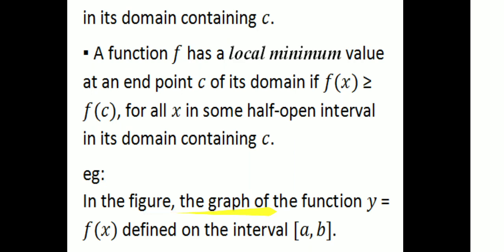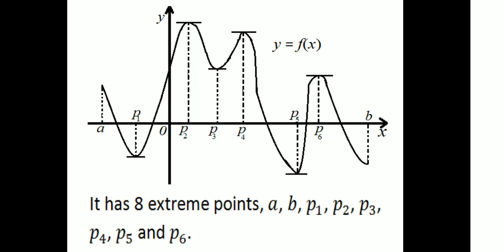Consider the graph of the function y = f(x) defined on the interval [A, B]. The function is defined on the open interval A to B. The points marked on the graph are A, B as endpoints, and interior points P1, P2, P3, P4, P5, P6. It has 8 extreme points in total.